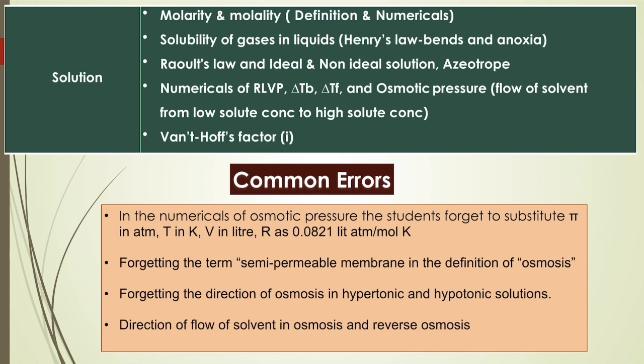In the definition of osmosis, students often forget to use the term 'semi-permeable membrane.' Without that term, the definition is considered incomplete and generally 0 marks are awarded. Students also often get confused with the direction of flow of solvent in hypertonic and hypotonic solutions. Additionally, students forget that in osmosis it is the flow of solvent that takes place, not the flow of solute or solution.